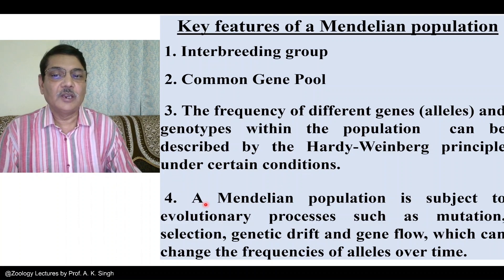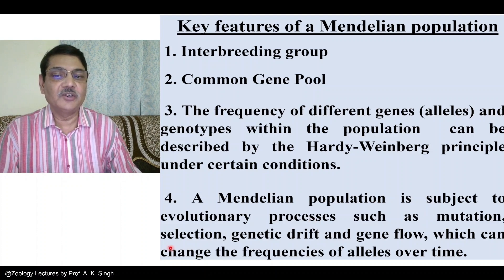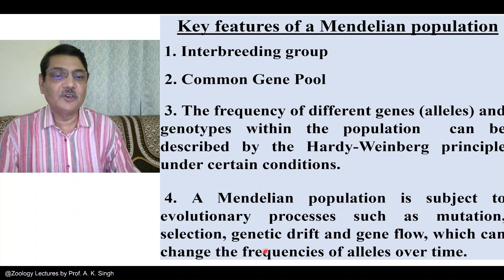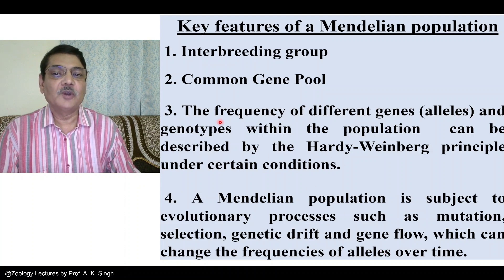A Mendelian population is subject to evolutionary processes such as mutation, selection, genetic drift, and gene flow, which can change the frequencies of alleles over time. As a whole, a Mendelian population is not different from the general term population.